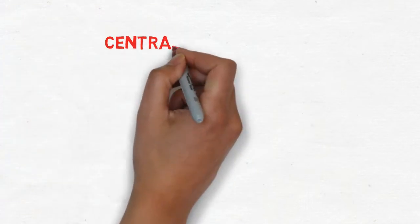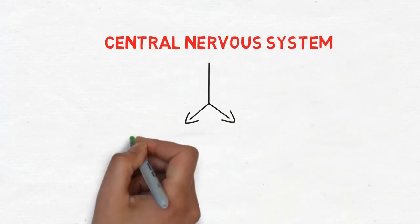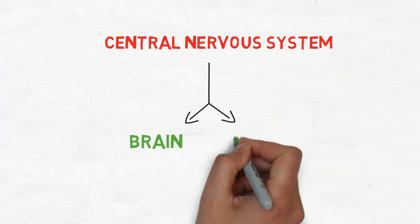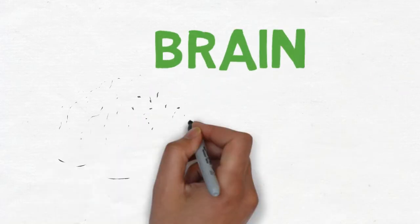Based on functions, the nervous system is broken down into two systems. The central nervous system is composed of the brain and the spinal cord. The brain is the center of the nervous system.